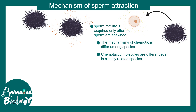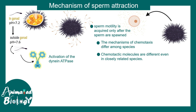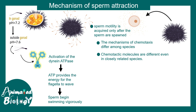Initially in the gonad, sperm is immotile because the pH is 7.2. Outside the gonad, the pH rises to 7.6, causing the sperm to become motile. The activation of dynein ATPases ensures that the flagella show wave-like movement, allowing the sperm to swim vigorously.